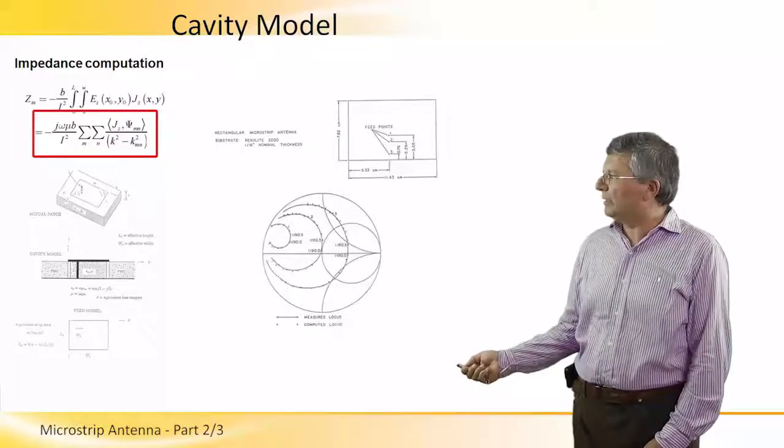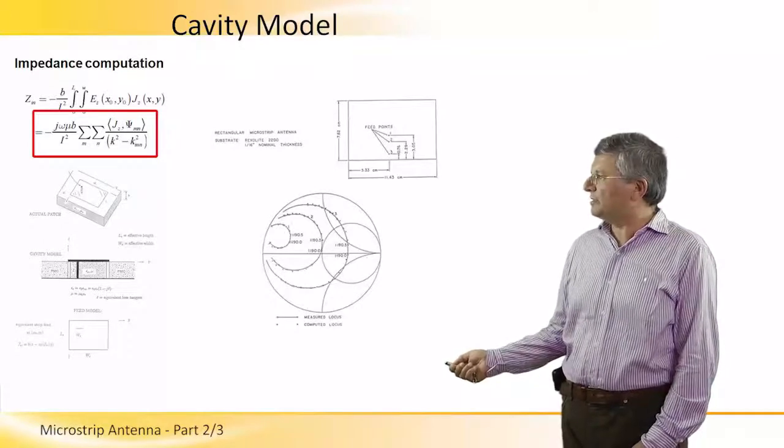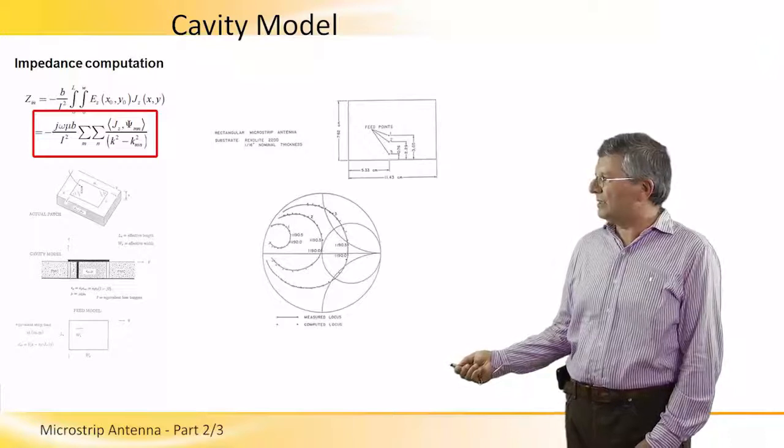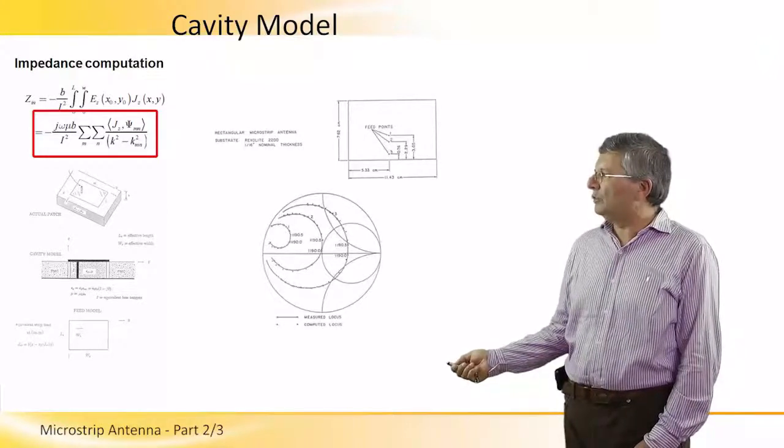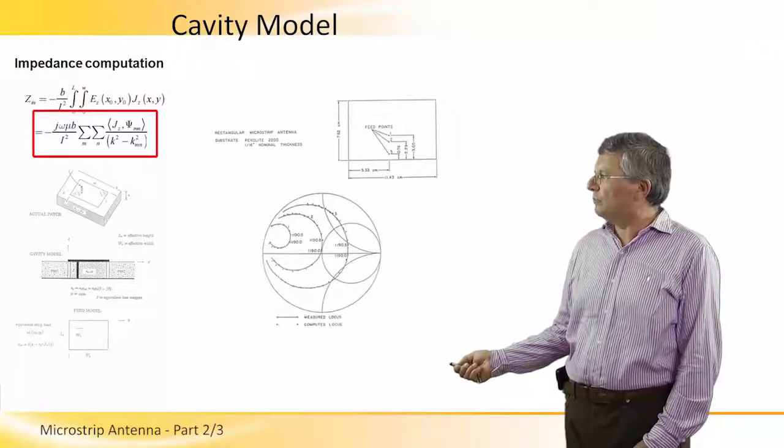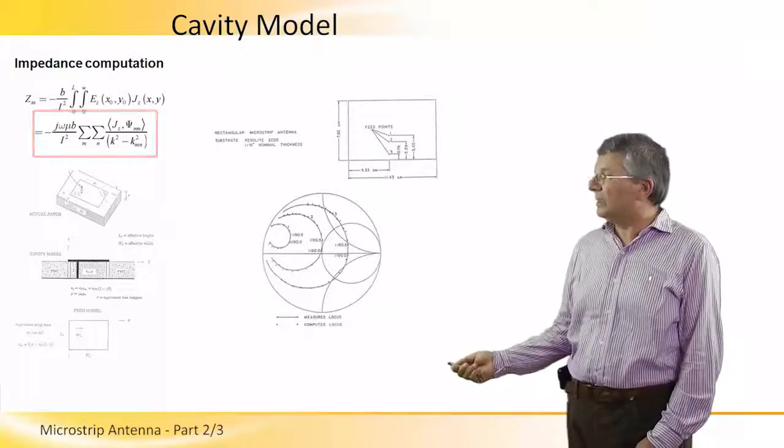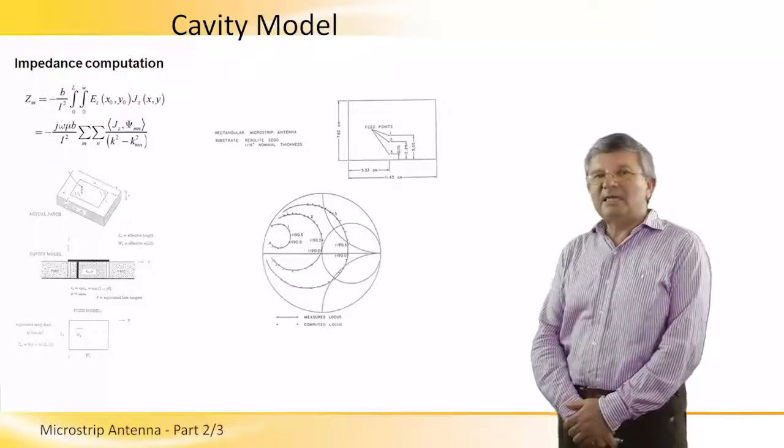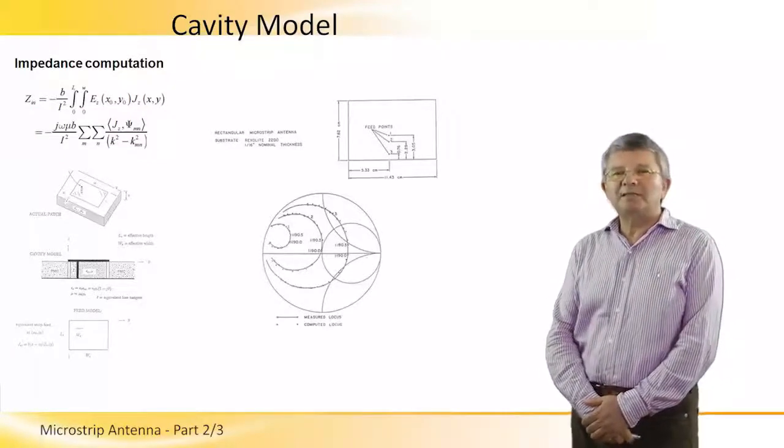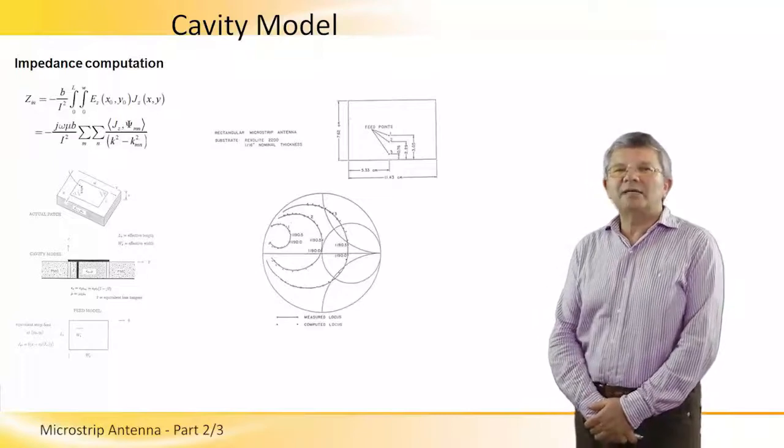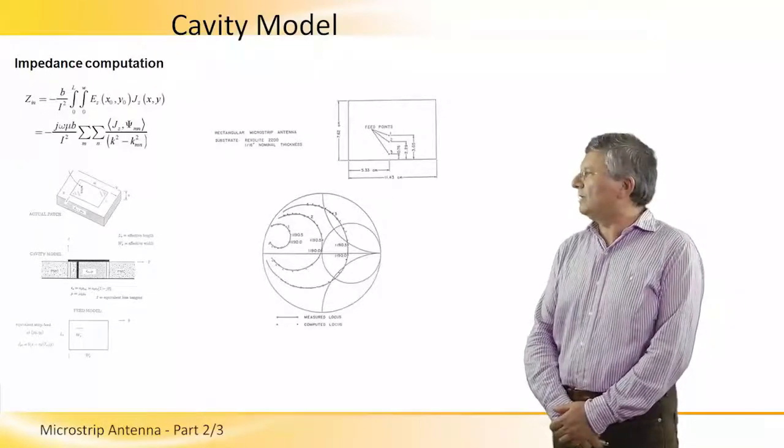And if we divide this quantity by I-square, we obtain the input complex impedance of the antenna. And this is actually a formulation which gives the total input impedance. As we can see, it is proportional to the superposition of all the modes that are existing in the cavity domain. Some of them are propagating and some of them are evanescent. They just contribute to the reactive part of the complex impedance.